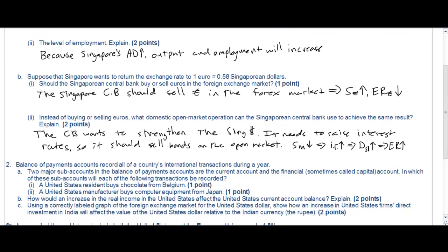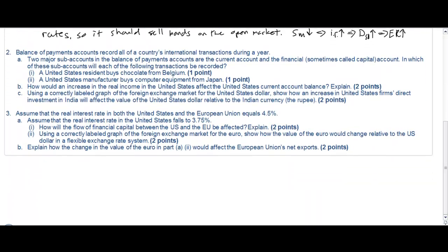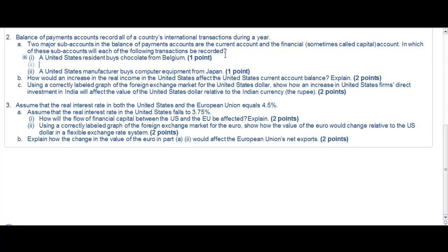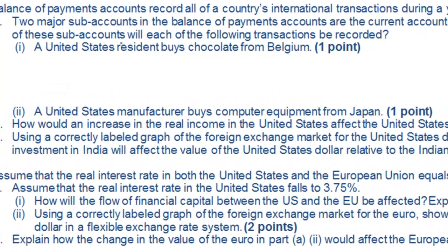In the next question we're asked to examine the two sub-accounts in the balance of payments. We're given two scenarios. The first one says a United States resident buys chocolate from Belgium. Which account will this be measured in, the current account or the financial account? Now chocolate is clearly a consumer good, therefore an exchange of consumer goods between countries is measured in the country's current accounts.